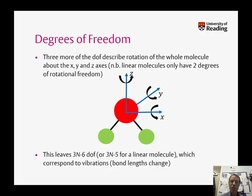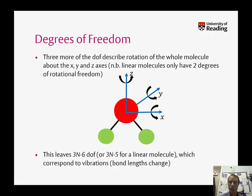3n minus 6 is the equation you need to use for a nonlinear molecule, but if the molecule happens to be linear, then only two of these degrees of freedom correspond to rotations, so therefore we have 3n minus 5 vibrational degrees of freedom. So when you're working out how many vibrations a molecule has, you need to first think about whether it's linear or not, and then make sure you use the appropriate equation, either 3n minus 6 or 3n minus 5.